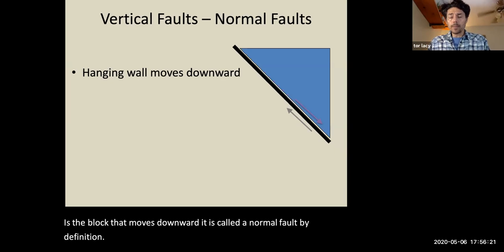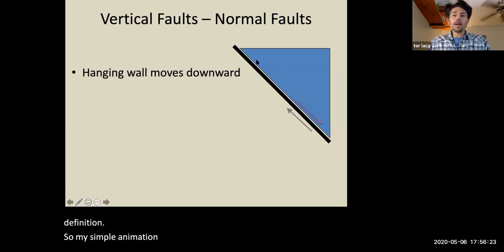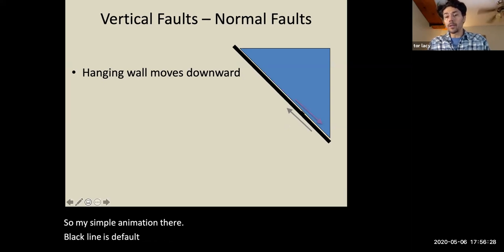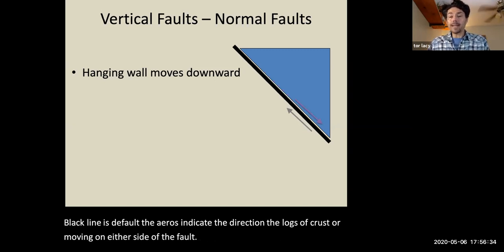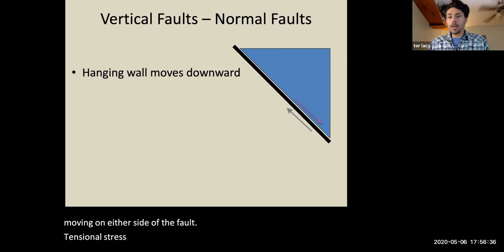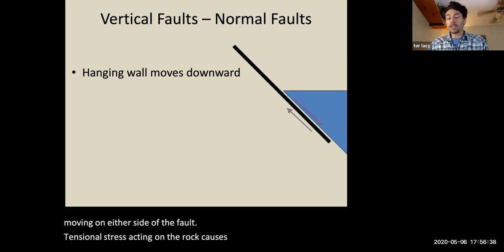So my simple animation there, the black line is the fault. The arrows indicate the direction the blocks of crust are moving on either side of the fault. Tensional stress acting on the rock causes the hanging wall to slide down.